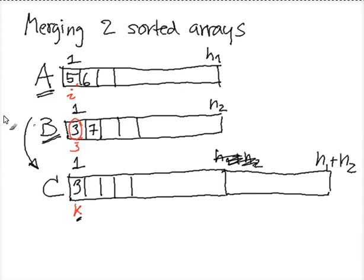After that, I move J to this and I move K to the next available position. Now I compare A[I] and A[J]. Five and seven. Five is smaller, so I put five in C[K].